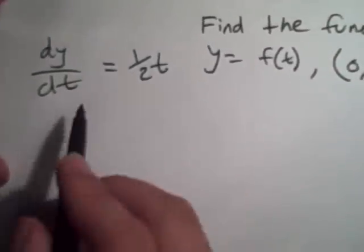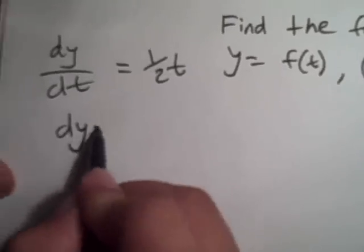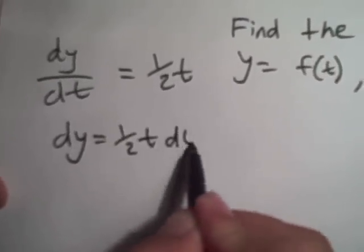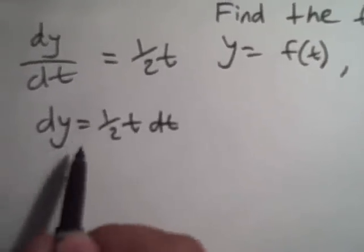Once again, step 1 we're going to divide them into parts. dy equals 1 half t dt. We integrate it.